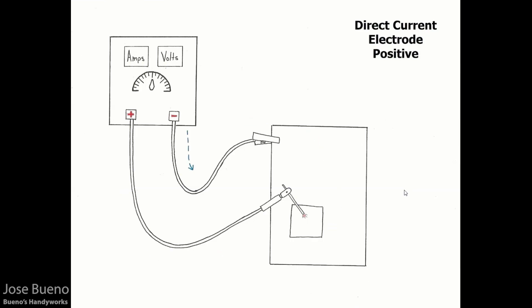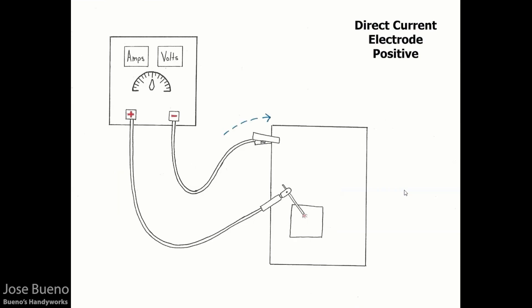This gives us a more live view of how current travels from the negative terminal through our cables and the welding arc, and back to the welding machine. With direct current electrode positive, the current flows from the negative into our ground clamp, through whatever it is that we're welding on, into our electrode cable, and back to the welding machine. Remember that two-thirds of the heat are focused on the welding electrode and one-third of the heat is focused on the work piece.